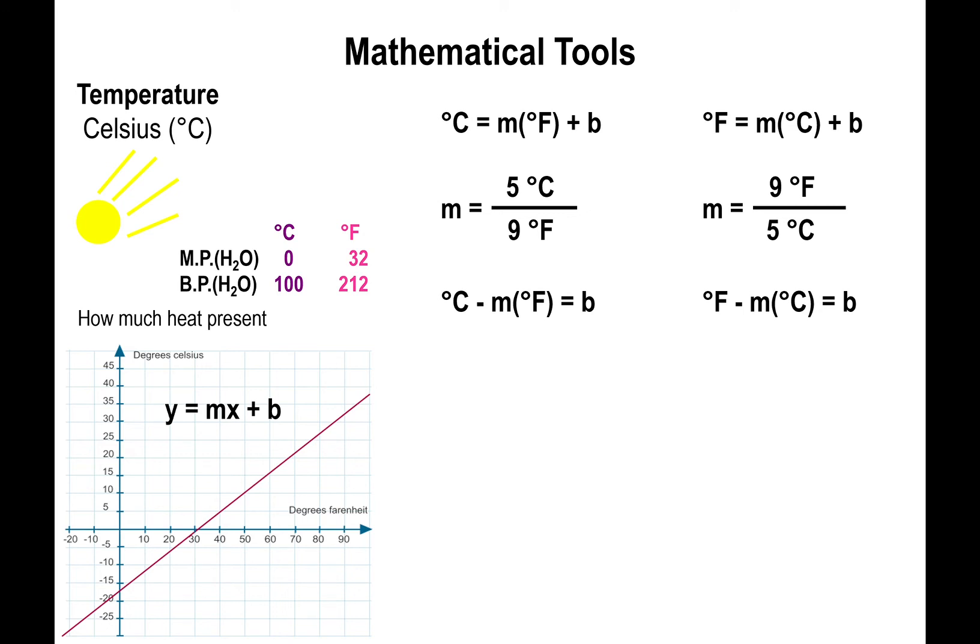All right, so we have the value of the slopes for both equations. What we're going to do now is with the value of the slope and any of the degree Celsius degree Fahrenheit rows, we're going to find out the value of the intercept. Now the one that seems to be the most trivial to use is the one for the melting point because the degrees Celsius are zero, so that will allow us to simplify the process a little bit. So I'm going to pick the value of the melting point for degrees Celsius and Fahrenheit in this equation and I will plug in the value of the slope as well.